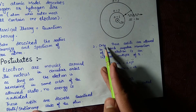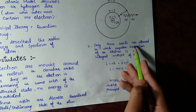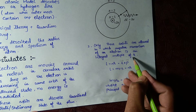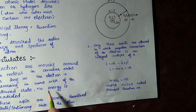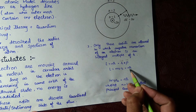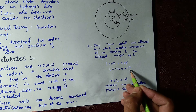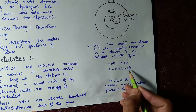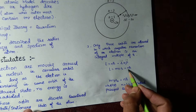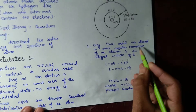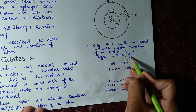The second postulate says that only those orbits are allowed in which the angular momentum of an electron is an integral multiple of ℏ (h-bar). The first postulate was classical, but this postulate involves Planck's constant and is purely quantum. When we introduce ℏ, we are talking about quantum mechanics. The angular momentum is therefore a quantized thing.